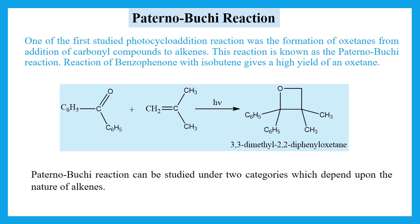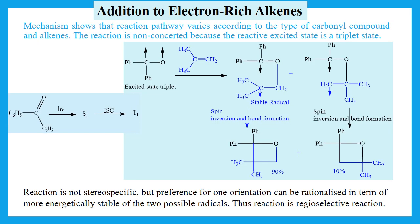Here is the reaction of benzophenone with isobutene, which produces oxetane in a high yield. This reaction can be studied under two categories, which depend upon the nature of the alkene. The first one is the addition of electron-rich alkenes.